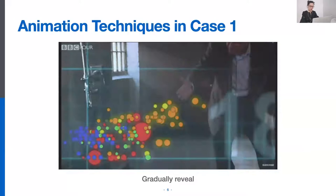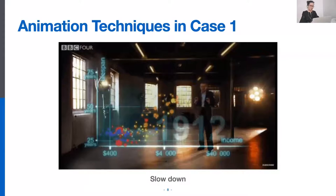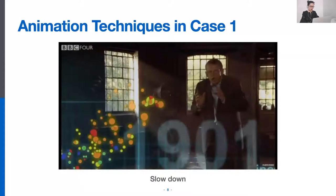The author then explains the visual encoding of a single bubble. Meanwhile, the bubble glows to call attention while an annotation is added to explain which country it represents. After that, the bubbles start to move with time. During this process, the author sometimes slows down or pauses to elaborate on certain countries.